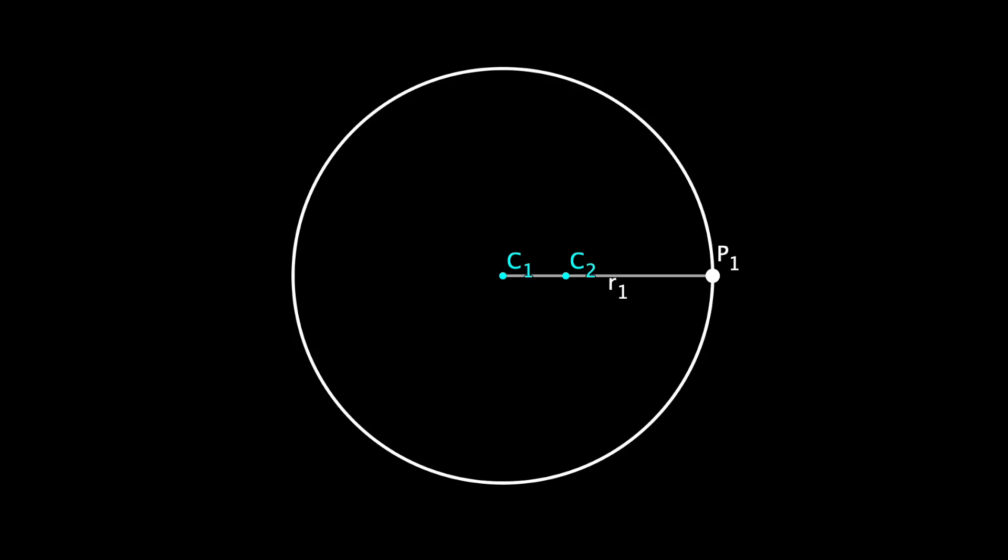Now, scale down radius r1 to obtain the segment c2 p1, then draw a circle with center c2 that passes through the point p1. Therefore, we obtain a second circle that is tangent to the original one because both radii are aligned, and in this case p1 is the point of tangency.